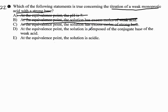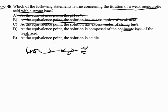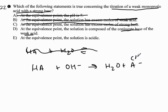Answer D: at the equivalence point, the solution is composed of the conjugate base of a weak acid. We know that's true because if we take HA and add OH⁻, we get water plus A⁻, which is the conjugate base. So D is the correct answer for that one. And we know the solution is not acidic.